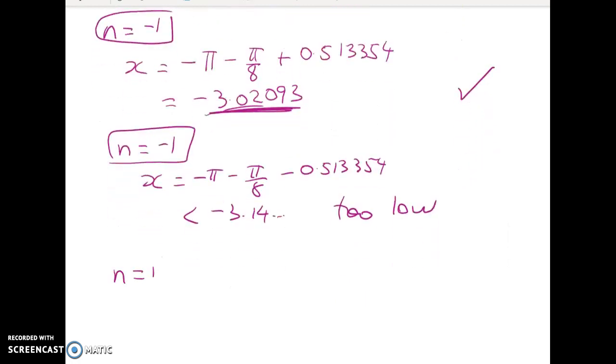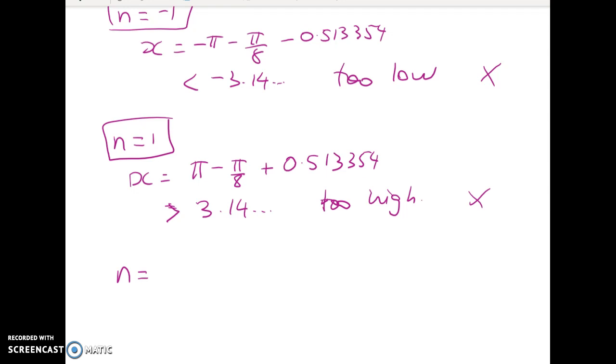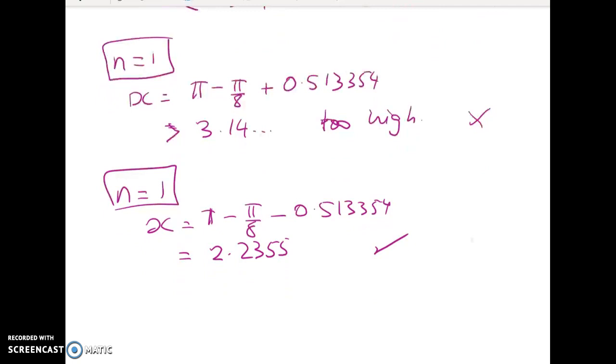Now let's go up and do n equals 1. It's the same thing. x is equal to 1π, always take away π/8 plus the number. And when I work that out, you can put that in your calculator, and you get a number that's bigger than 3.14, so it's too high. It's a little bit like Goldilocks and the three bears. So that one's not in. Now let's look at the other one for n equals 1. x is equal to π minus π/8 minus 0.513354, and that equals 2.2355. And so that one will be in.